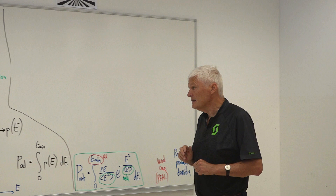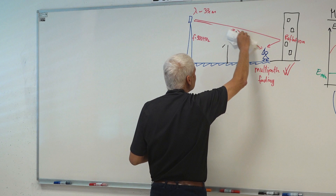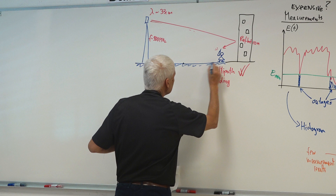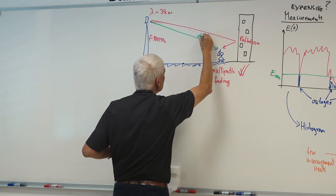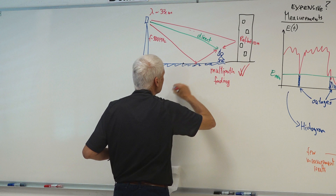A better alternative is to remove this house here — this is really causing trouble. If I remove this house, my problem turns a little bit different. I now have a direct ray and I still have some reflection from the ground. The reflection of the ground may be very strong, but this reflection is not large.